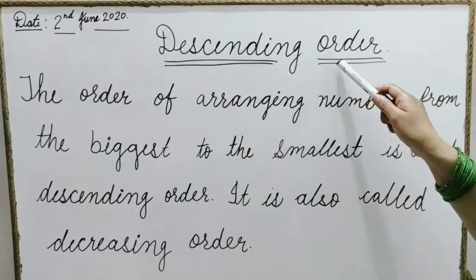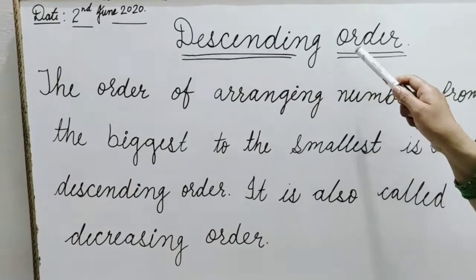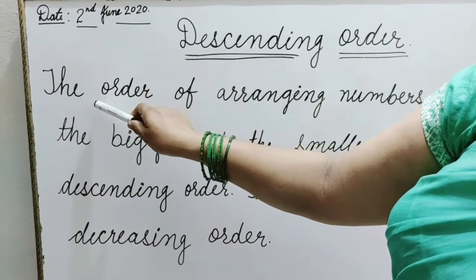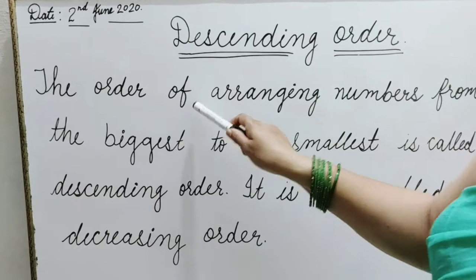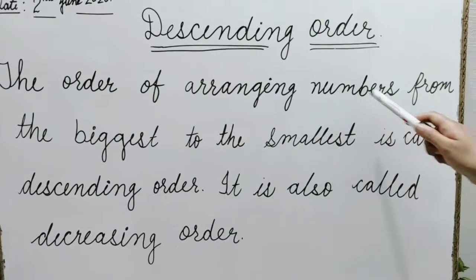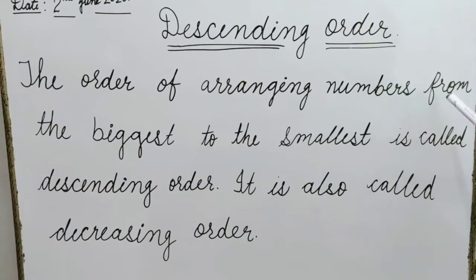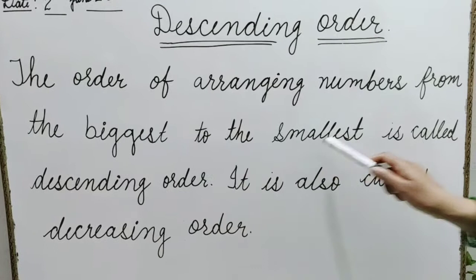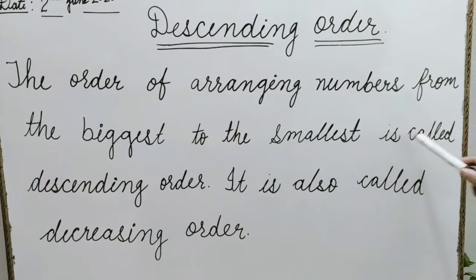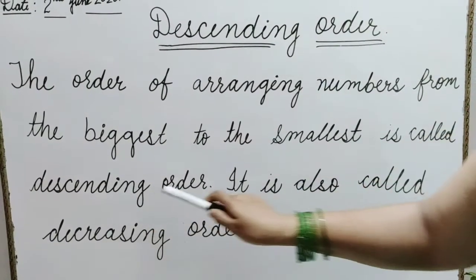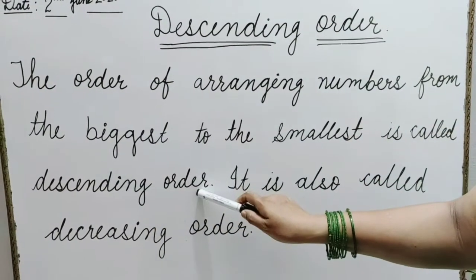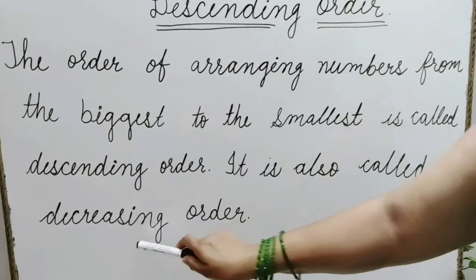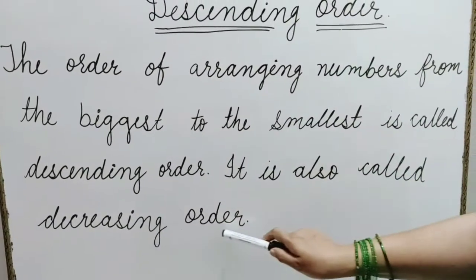Descending order. The order of arranging numbers from the biggest to the smallest is called descending order. It is also called decreasing order.